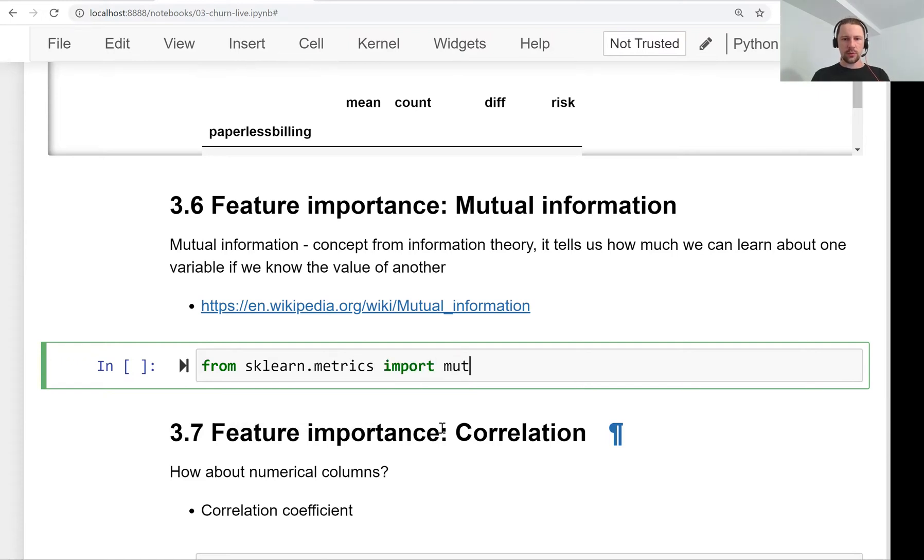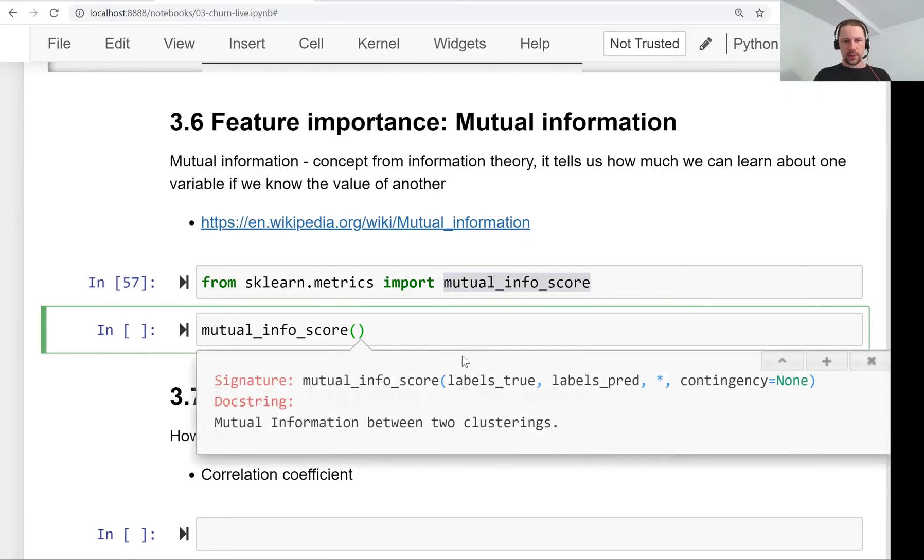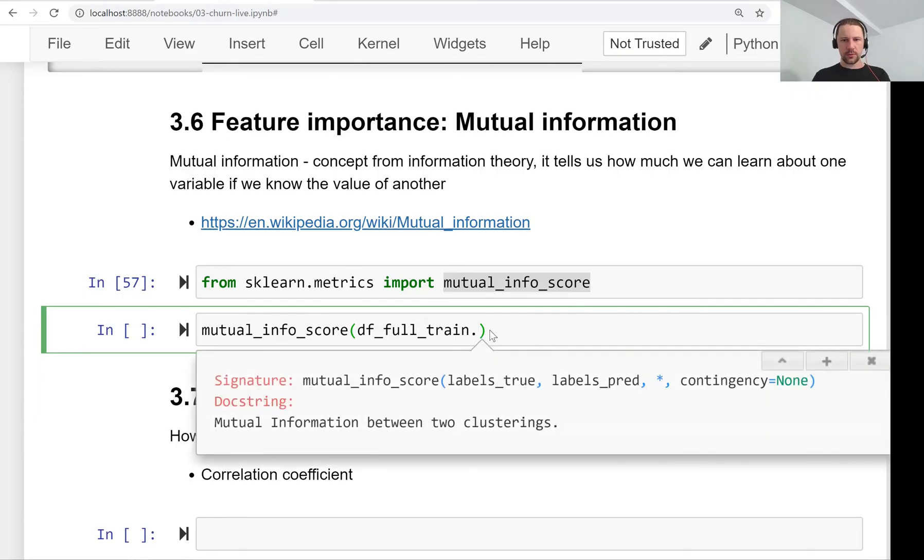This is what we need to use. The way it works is we need to first say what is the label we are interested in. For us, it's our target variable, so the target variable is churn.